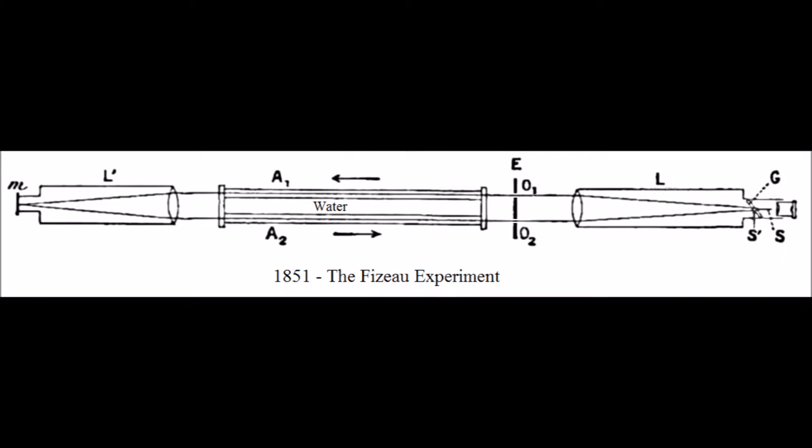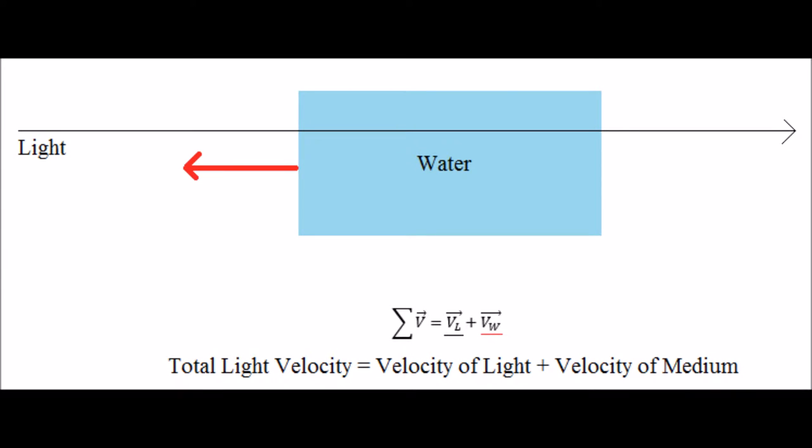The idea of light interference led to Fizeau creating an interferometer in 1851 to test the theory of the drag on electromagnetic waves caused by the movement of the media through which the wave is propagating.